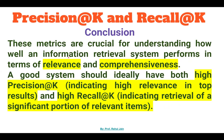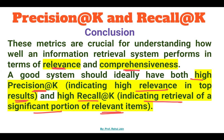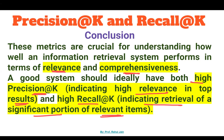These metrics are very crucial for understanding how well an information retrieval system performs in terms of relevance and comprehensiveness. A good system should ideally have both high Precision@K — indicating high relevance in top results — as well as high Recall@K — indicating retrieval of a significant portion of relevant items. I hope the concept is clear. Put your thoughts in the comment section, like the video, subscribe the channel, and stay tuned for more such important video lectures. Have a nice day!